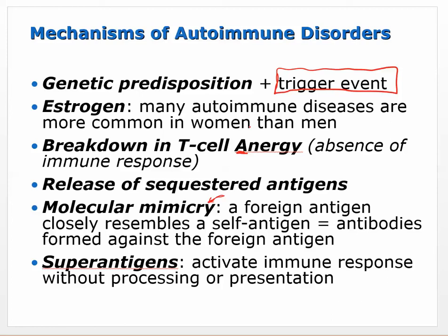Release of sequestered antigens - something could build up in adipose tissue, and when you lose weight, those antigens built up in the adipose are released, causing an immune response - likely a type 3 reaction since they'd be floating around and forming immune complexes.